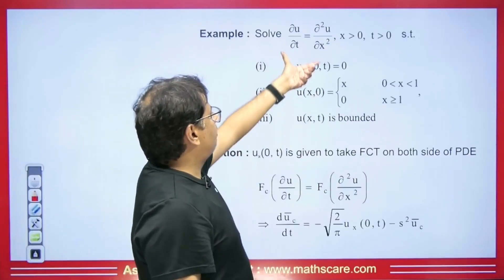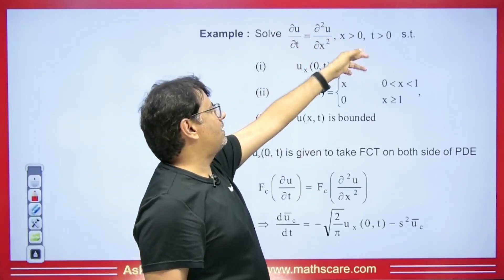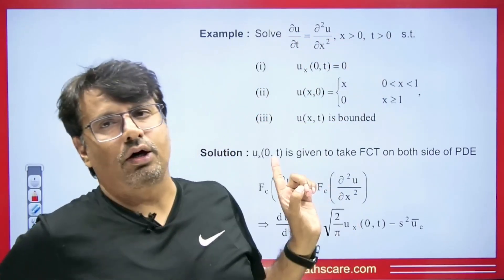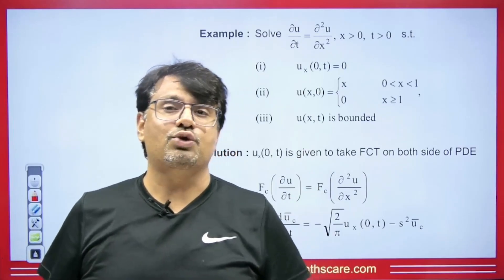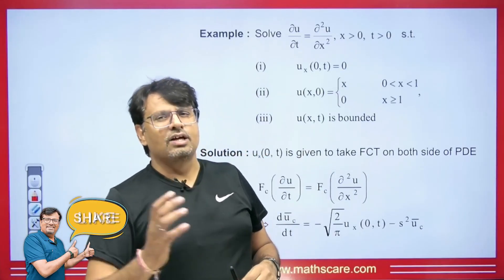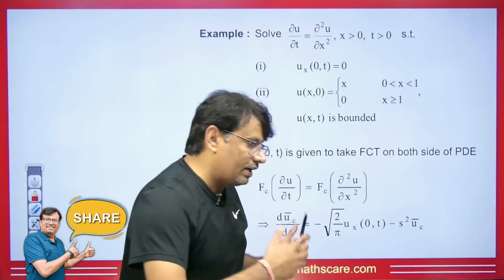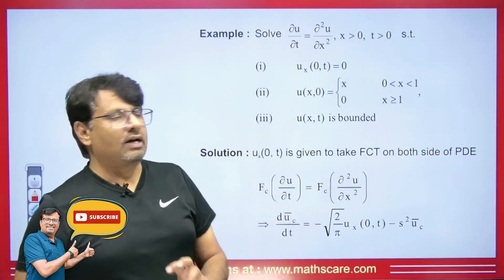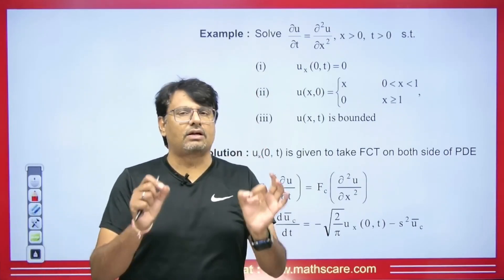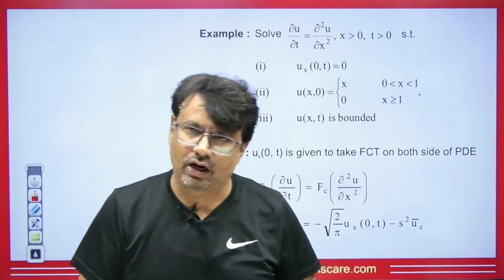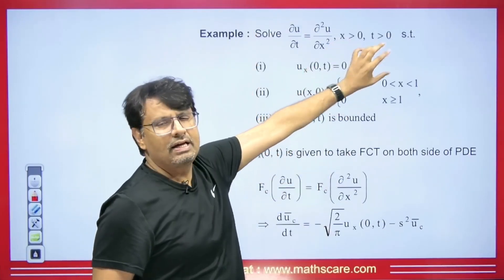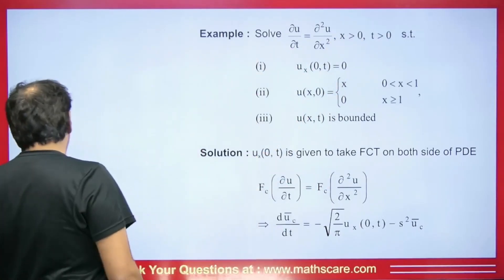Now let's look at an example. We are asked to solve a partial differential equation where x is greater than 0 and t is greater than 0. This is very important for students preparing for the CSIR NET exam, as such questions appear in exams. Since u_x(0,t) is given in the question, we will use the Fourier cosine transform.